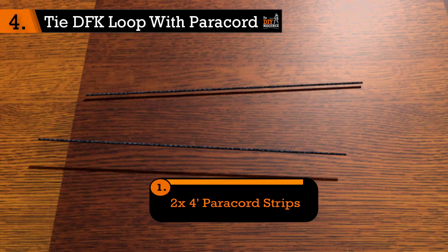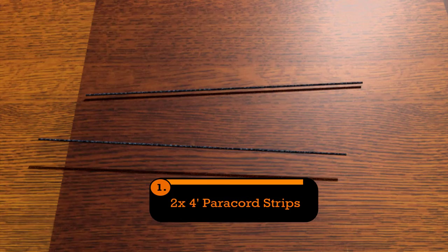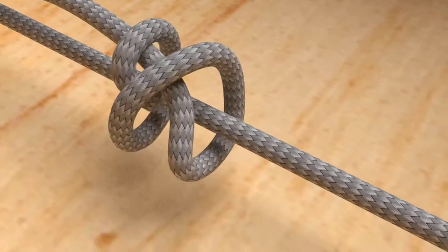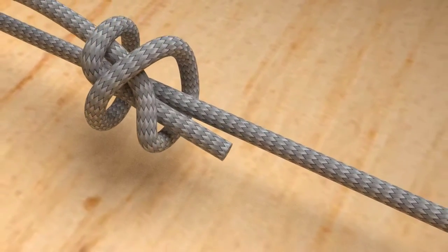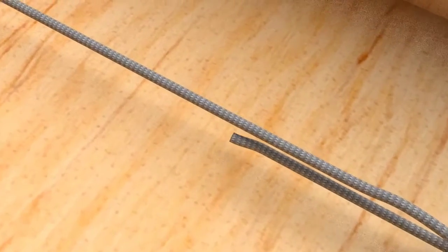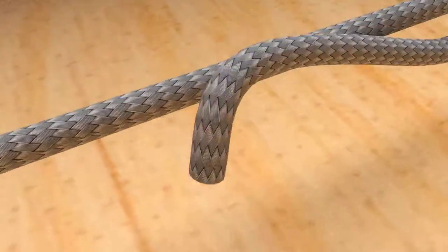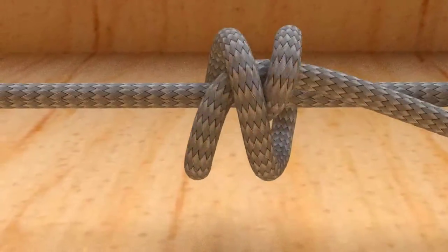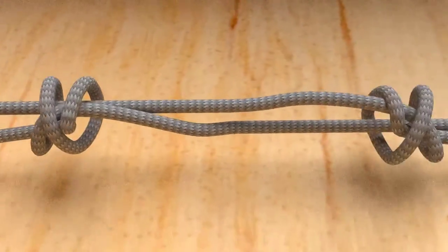Step 4. Tie double fisherman's knot loop with paracord. For this step, you're going to be referring to a YouTube video I've made which details how to tie a double fisherman's knot. You're going to be using this knot to tie your paracord pieces into loops. Get your two pieces of 4 foot paracord and then follow the steps in the video linked in the description to tie the two ends of the loop together.